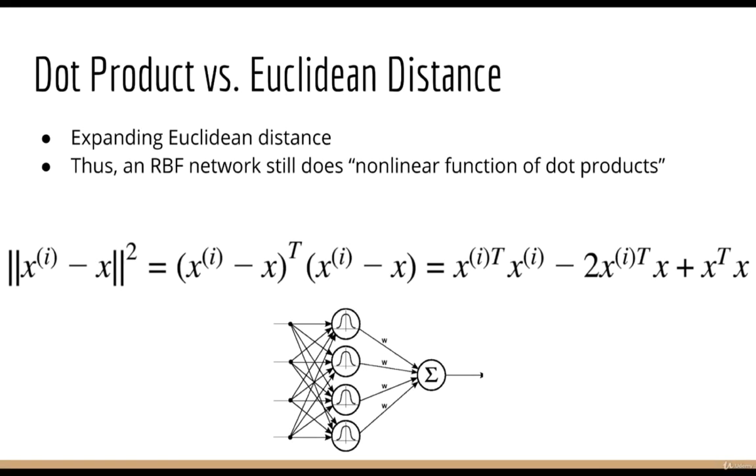One interesting fact is that the Euclidean distance actually breaks down into a dot product. If you recall, the square length of a vector is equal to the vector dotted with itself. Therefore, we can actually expand the square length term, and all we get is a series of dot products. Then we can imagine, in the deep learning neural network sense, that the activation function is the exponential of this series of dot products as its input argument.